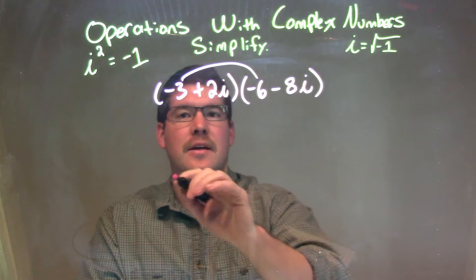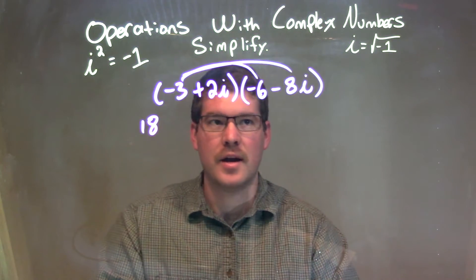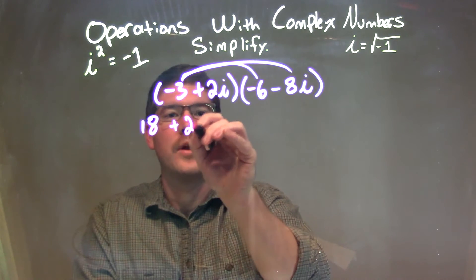Negative 3 times negative 6 is positive 18, and negative 3 times negative 8i is positive 24i.